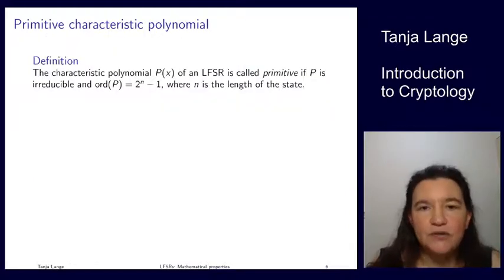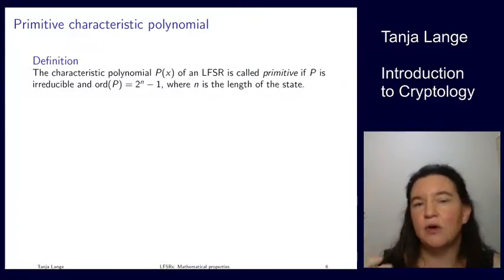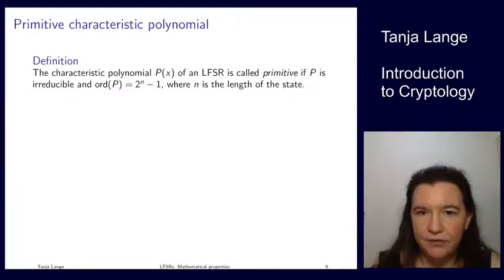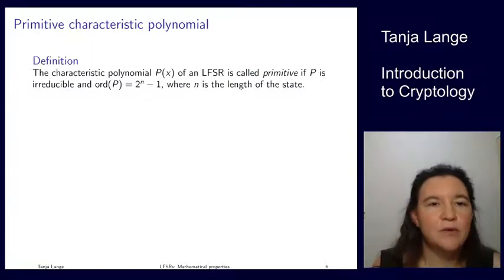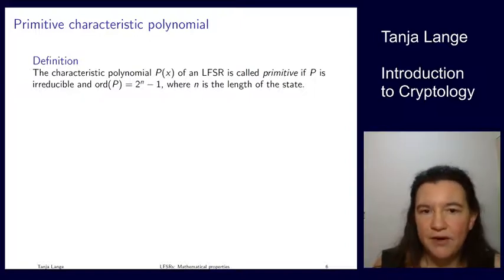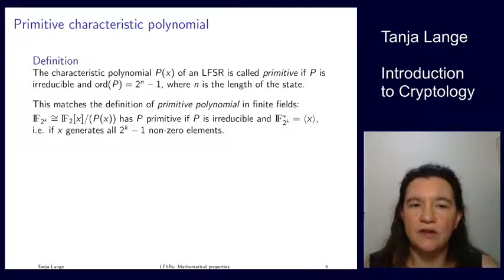Now a definition for this nice case that the order is full. So in the first three cases, we had that the order of this characteristic polynomial was really 2 to the n minus 1, which is maximal. Then we call this polynomial primitive. So the characteristic polynomial is primitive if it is irreducible. And the order is 2 to the n minus 1.